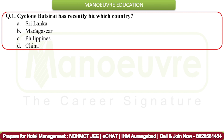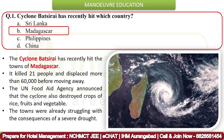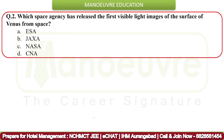First question: Cyclone Batsirai has recently hit which of the following countries? The correct answer is Madagascar. The cyclone hit the towns of Madagascar, killed 21 people, and displaced more than 60,000 before moving away. The United Nations food aid agency announced that the cyclone also destroyed crops of rice, fruits, and vegetables. The towns were already struggling with the consequences of a severe drought.